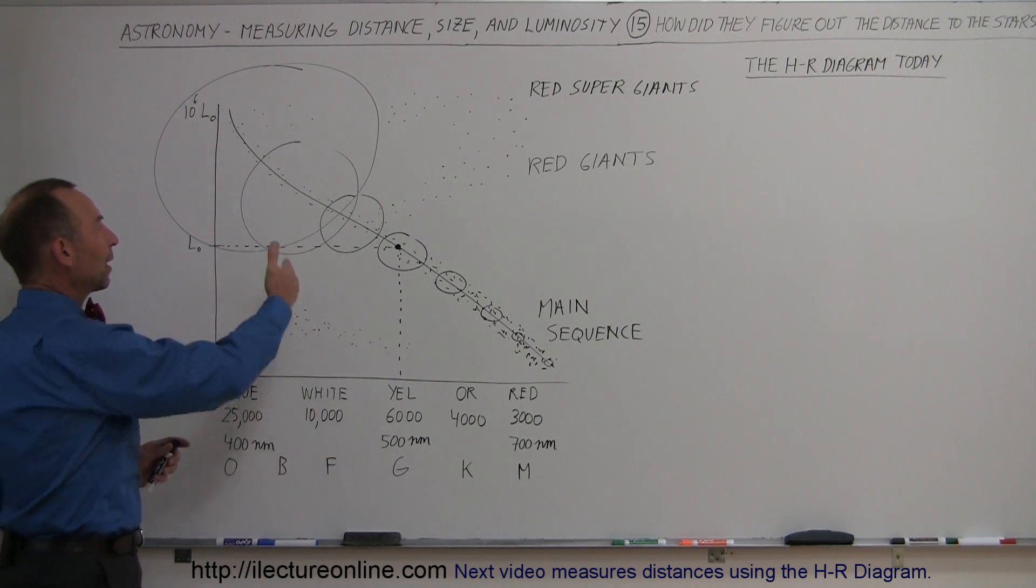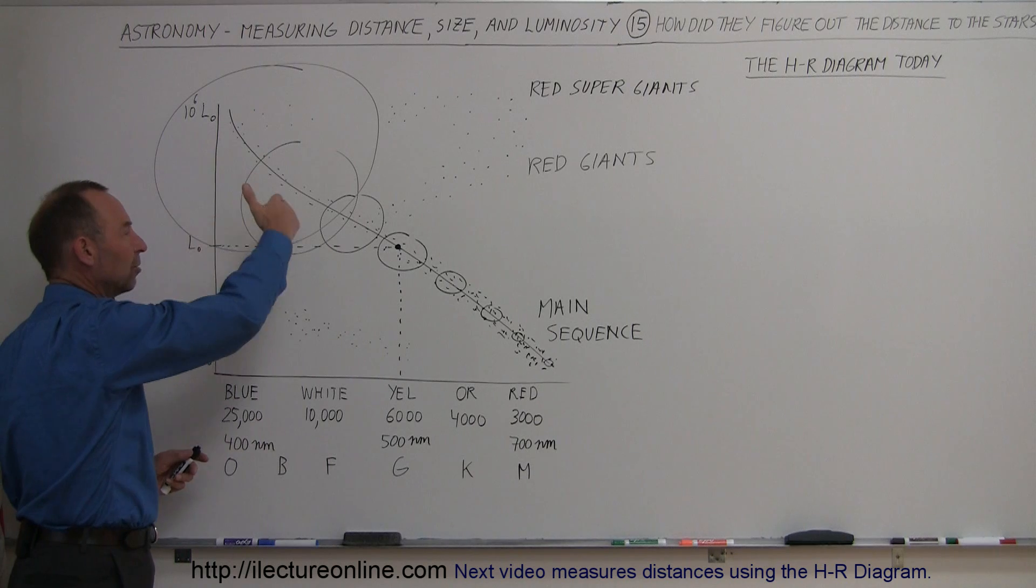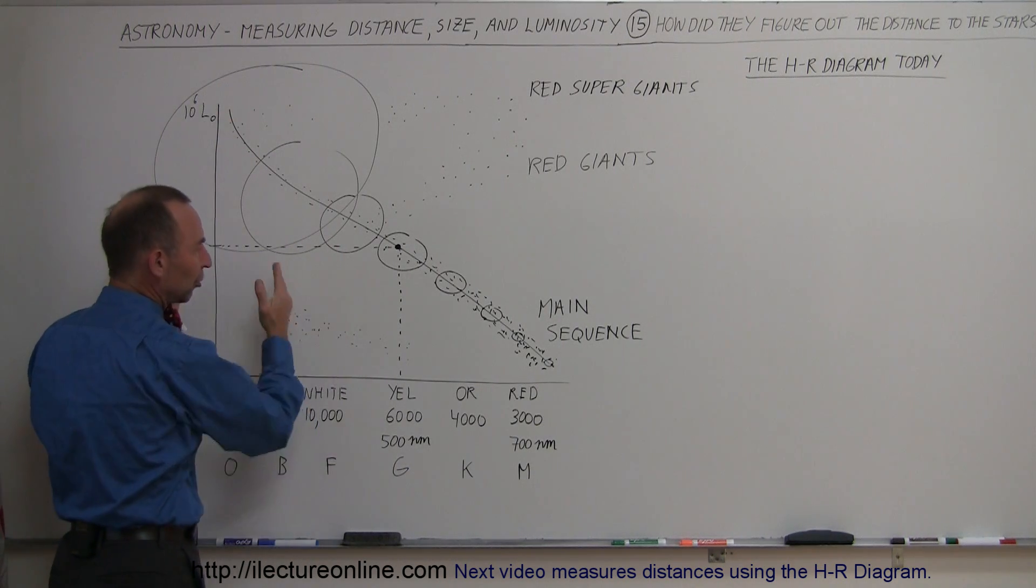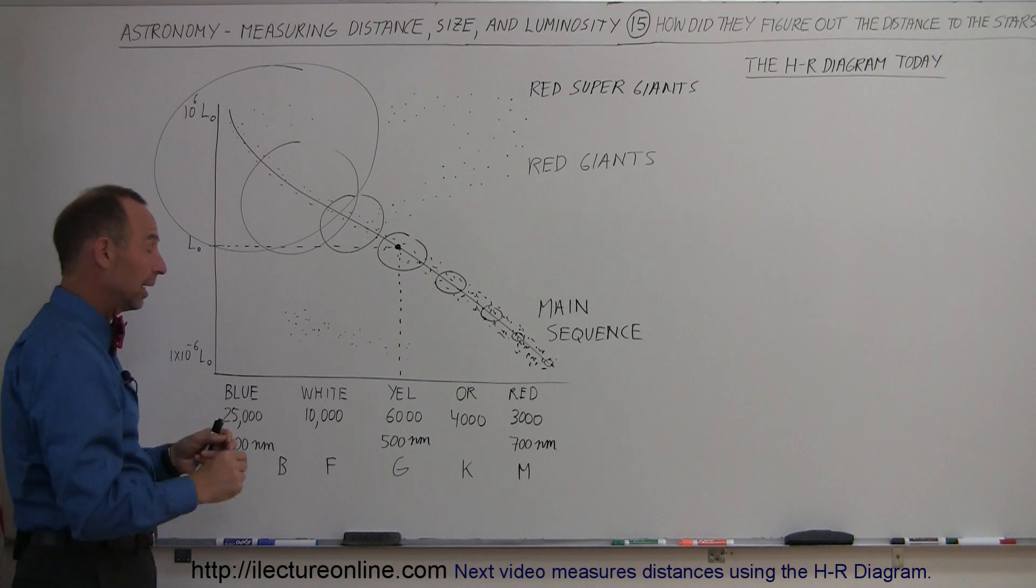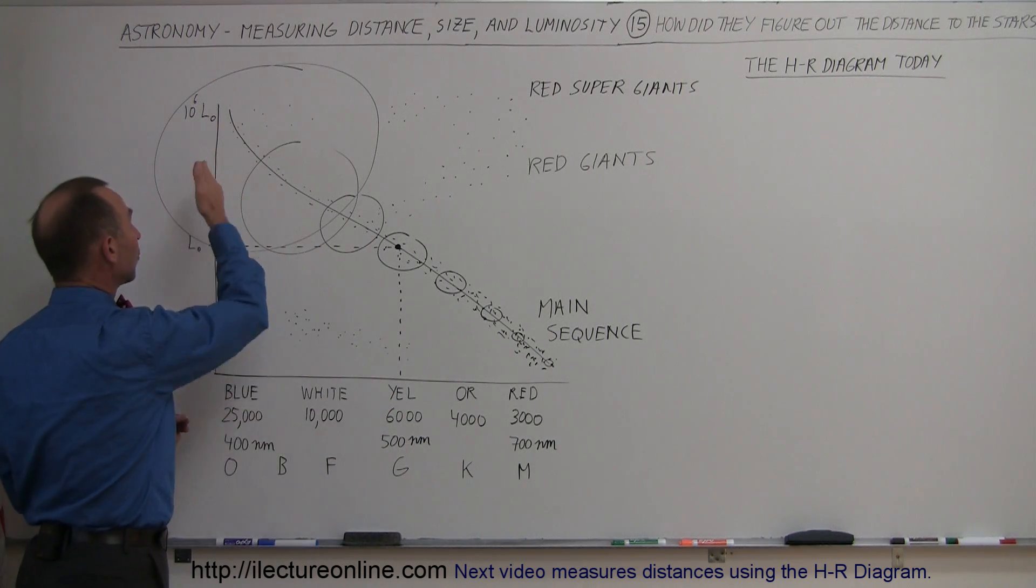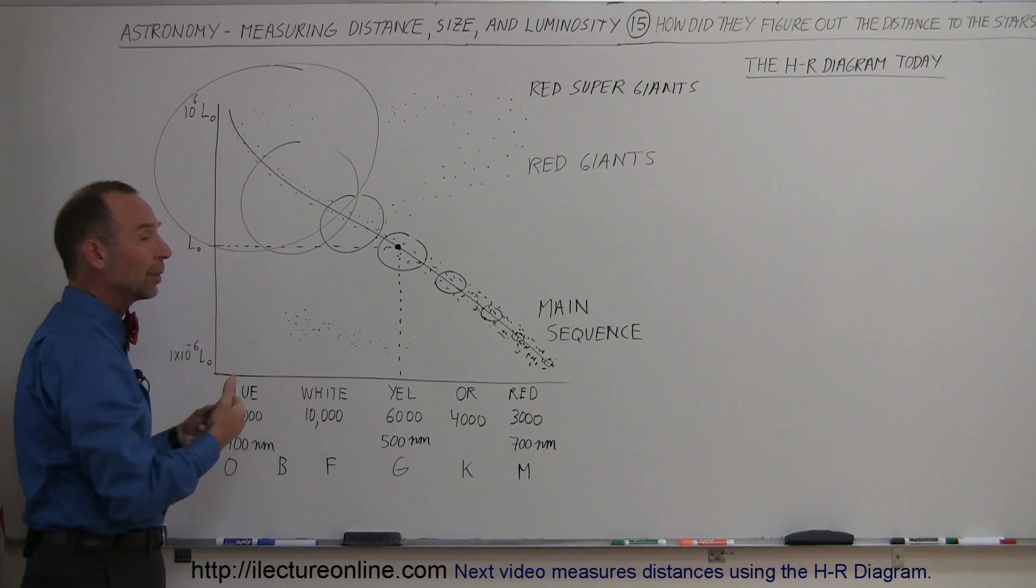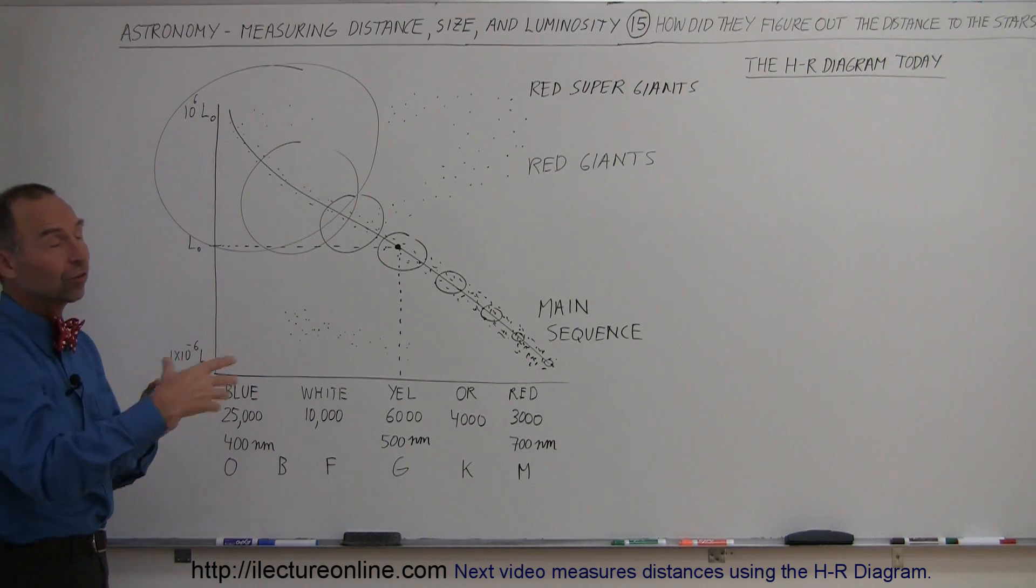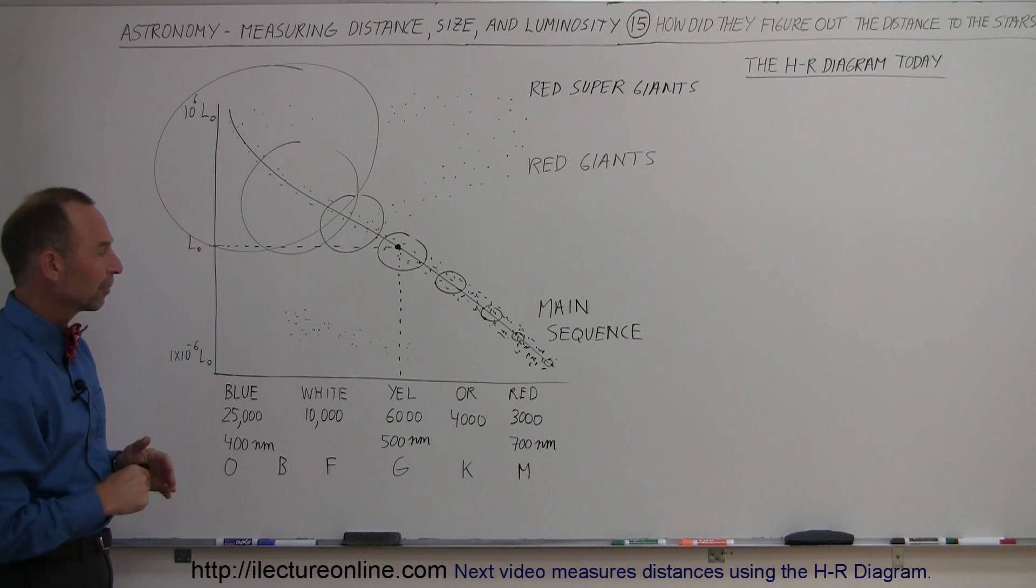Now, notice that once we have this association between the color and the actual luminosity. So from this chart, anytime we find a star and we find its color, we can find its luminosity. And from its luminosity, we can then go measure its apparent luminosity. And from that, we can measure its distance. So that's now how we know how far stars are away from us.